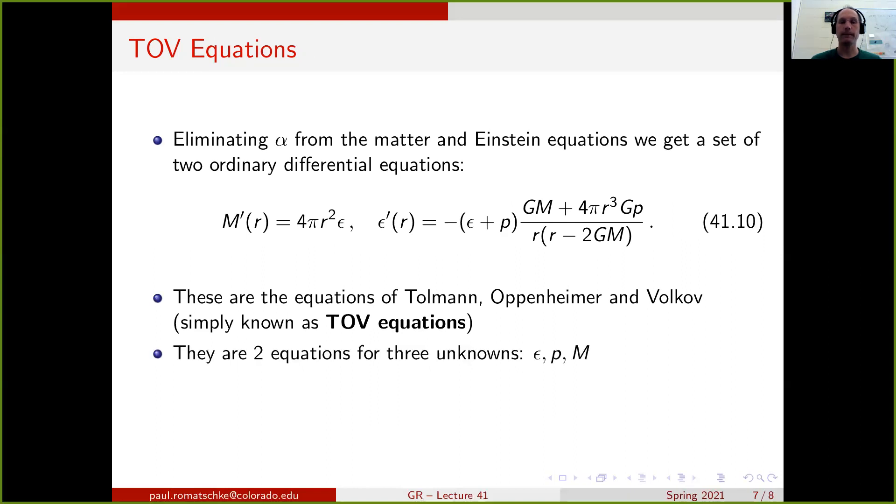And they sort of constitute two equations for three unknowns: epsilon, P and M. So in order to close the system and actually get results for star structure, we need to supplement them by an additional equation, such as the equation of state P equals P of epsilon for matter.